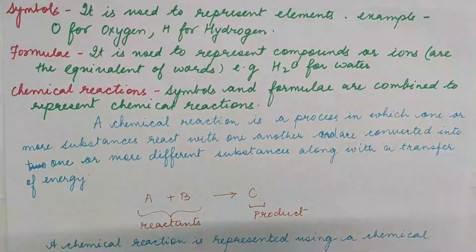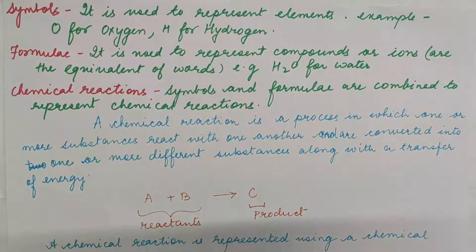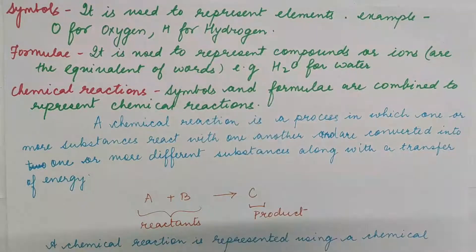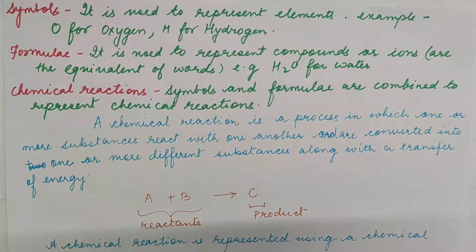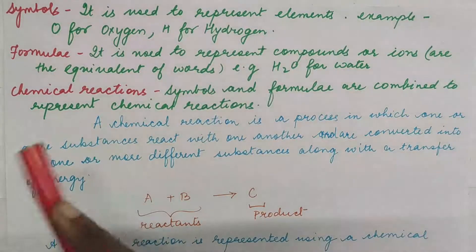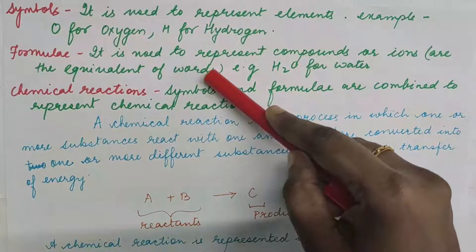When we talk about the formula, it is used to represent compounds or ions. This can be the chemical formula or the molecular formula of any compound. Like we represent H₂O for water, NaCl for sodium chloride, KOH for potassium hydroxide, and so on. They are equivalent to the words that you use in English — with the symbols we combine to make the formula.